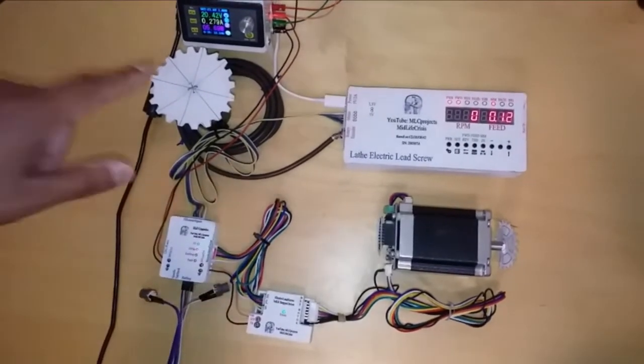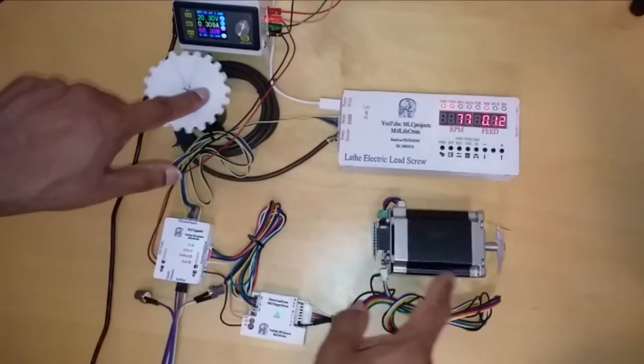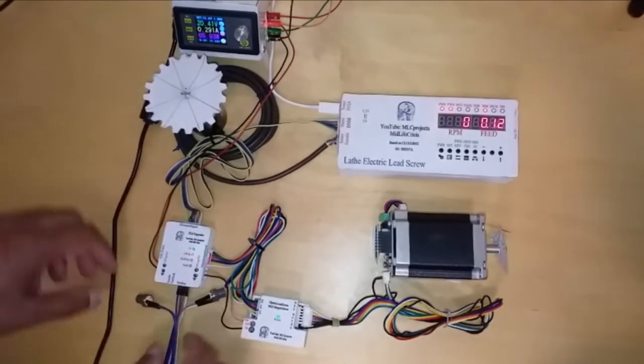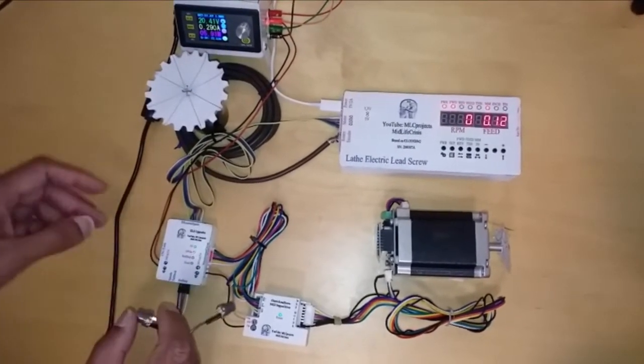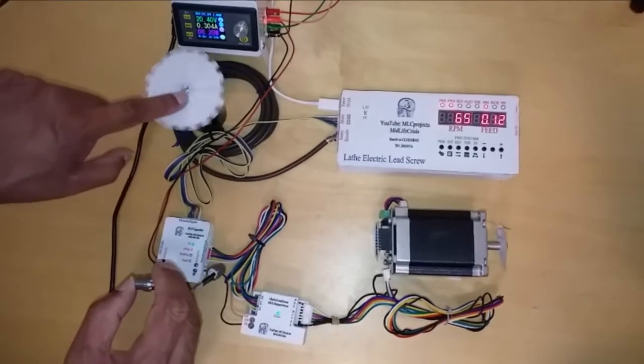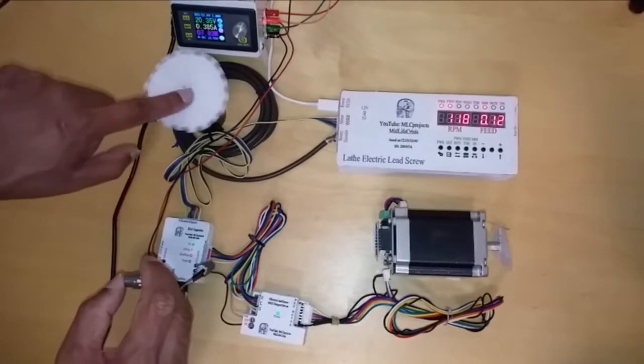When I am turning the motor, the rotary encoder will turn and the end stop won't work because it is not enabled. So I am turning and pushing the button and nothing happens.